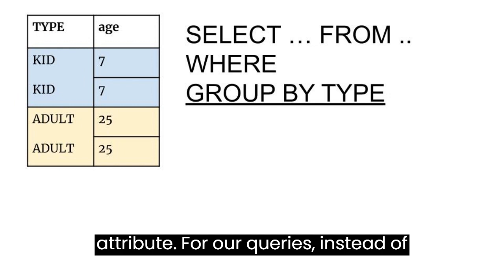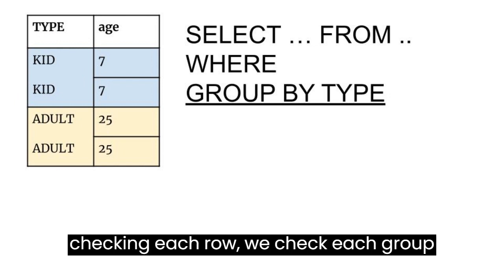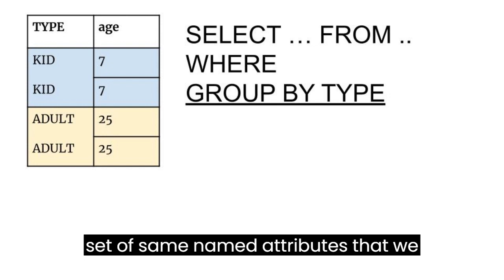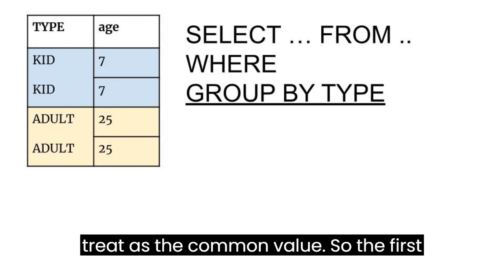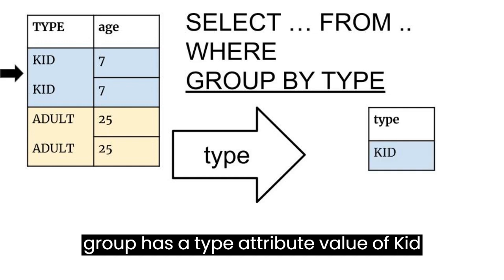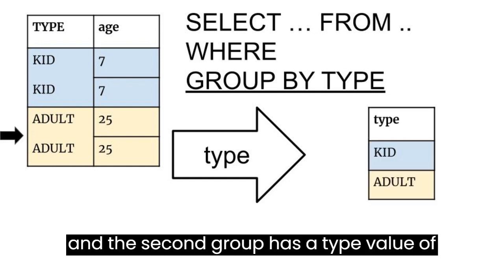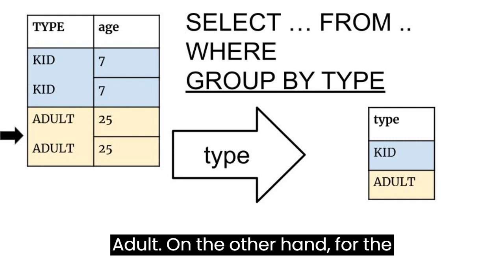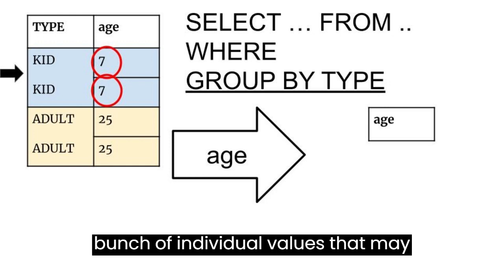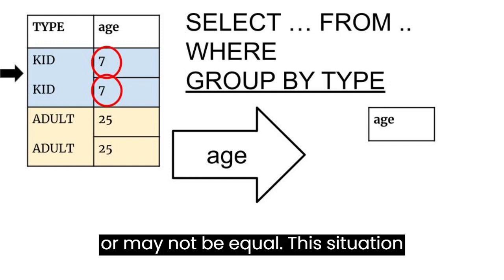For our queries, instead of checking each row, we check each group, where our grouped by attributes have a set of same named attributes that we treat as the common value. So the first group has a type attribute value of kid, and the second group has a type value of adult. On the other hand, for the attributes we didn't group by, we have a bunch of individual values that may or may not be equal.